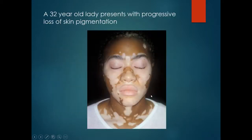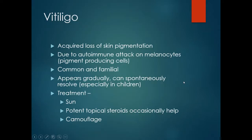A 32 year old lady presents with progressive loss of skin pigmentation. This is vitiligo, which is an autoimmune condition.